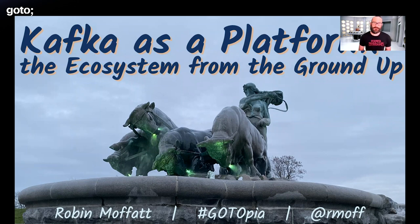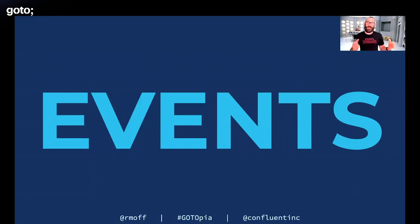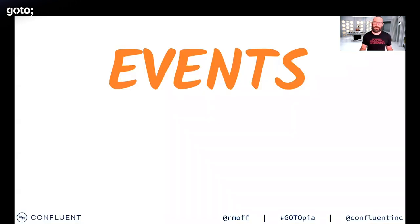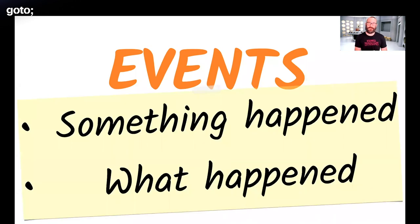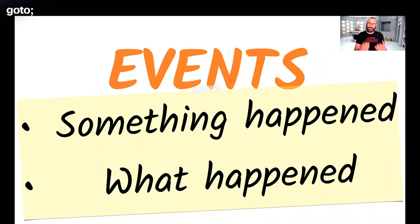What Kafka does for us is give us a new category of software that treats something called events as first-class objects. Events are all around us and they model the real world. Almost all of you work with data in your day-to-day jobs — you store data in databases, message queues, NoSQL stores — and almost all of that data started life as an event. You can quite easily trace it back to an event if you think carefully about the data you work with.